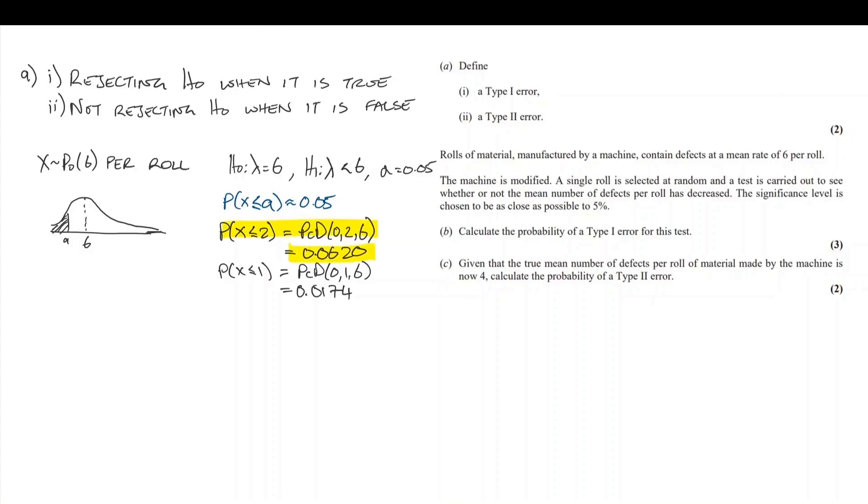This is what we're focusing on. This is not the critical region, though. The critical region must be written as x is less than or equal to 2.